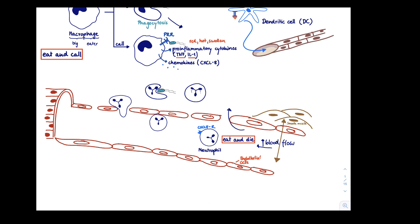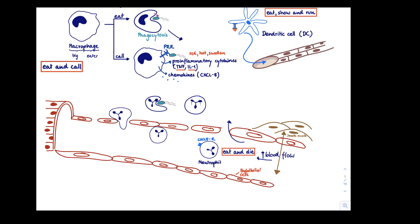Pathogen recognition receptors don't recognize if something is from your own body — they recognize an invader. They can tell classes: there's probably a bacteria invading, or there's probably a virus. Important examples for pathogen recognition receptors are TLRs — toll-like receptors, which we'll hear more about later. Once these pathogen recognition receptors detect something like a bacteria, they send a signal to the nucleus and start the production of pro-inflammatory cytokines, which trigger inflammation.